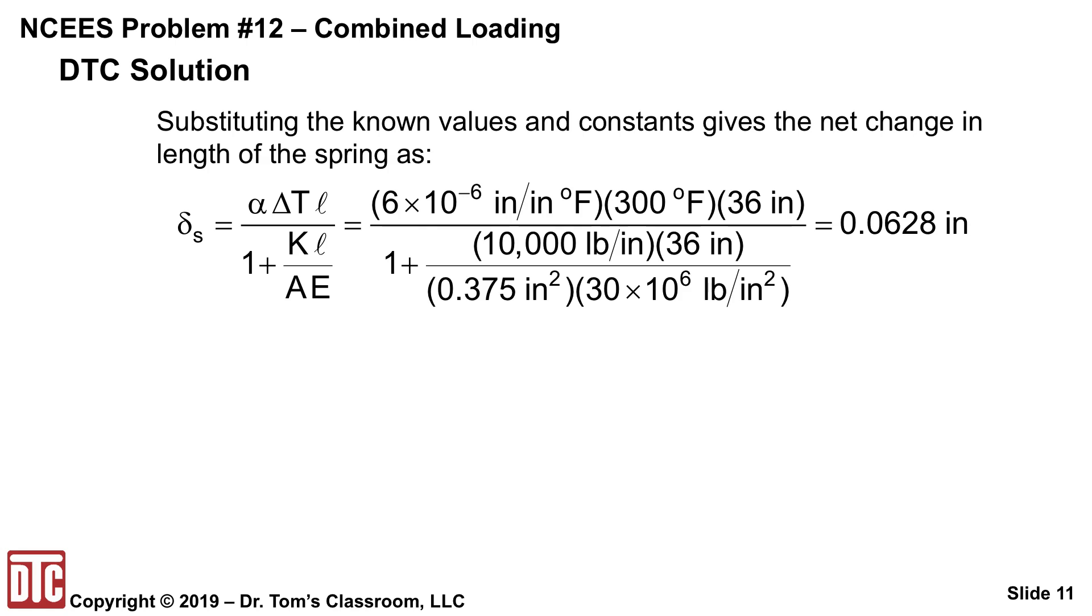Well, we've got pounds per inch times inch, so that gives you pounds, and then in the denominator, you've got 0.375 inches squared times pounds per inch squared, so that gives you pounds. So that's non-dimensional, so yes, we will get inches, and I get 0.0628 rounded to that value.